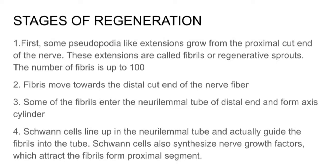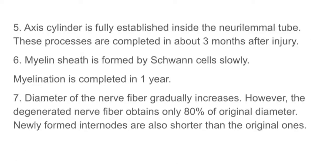Schwann cells also synthesize nerve growth factor which attracts the fibers from the proximal segment. The axon cylinder is fully established inside the neurilemma tube. These processes are completed in about three months after injury. Myelin sheath is then formed by Schwann cells, and myelination is slowly completed in one year. The diameter of the nerve fiber gradually increases.